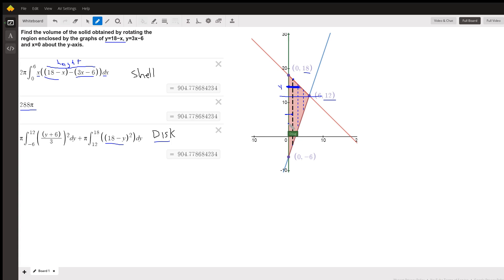For this region down in here, and I'll change the color to red. There's a typical disk. And for that y value, the x distance is this y plus 6 over 3. We're integrating from negative 6 up to 12. Outer radius squared minus 0 squared.